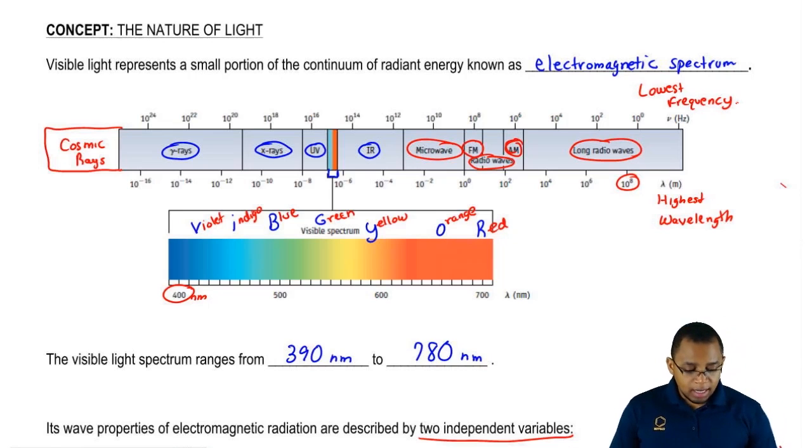On the other side, gamma rays are 10 to the 24 for frequency. These would have the highest frequency. On the bottom, therefore, they would have the lowest wavelength.